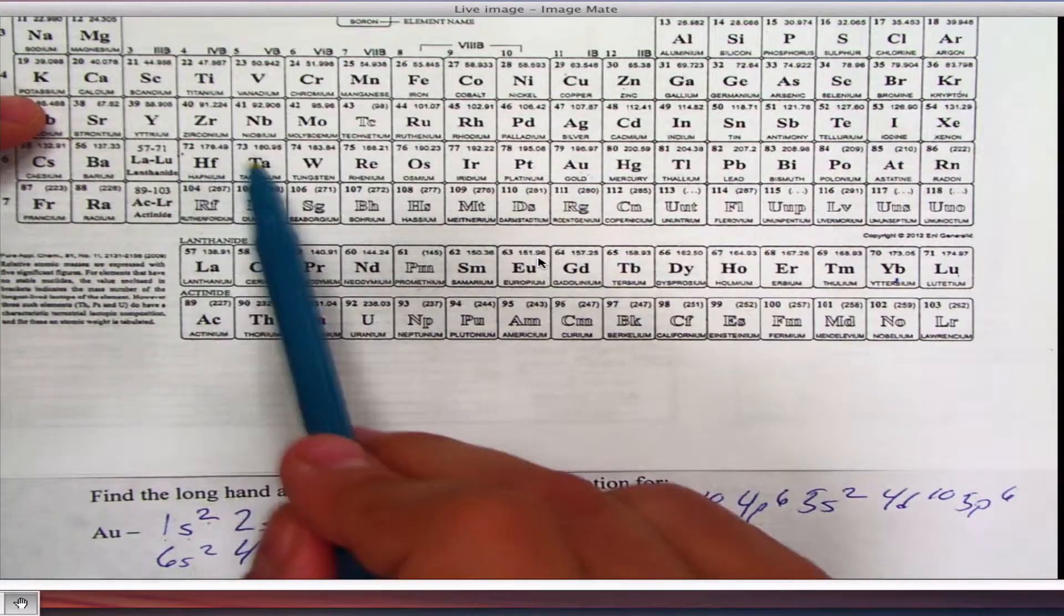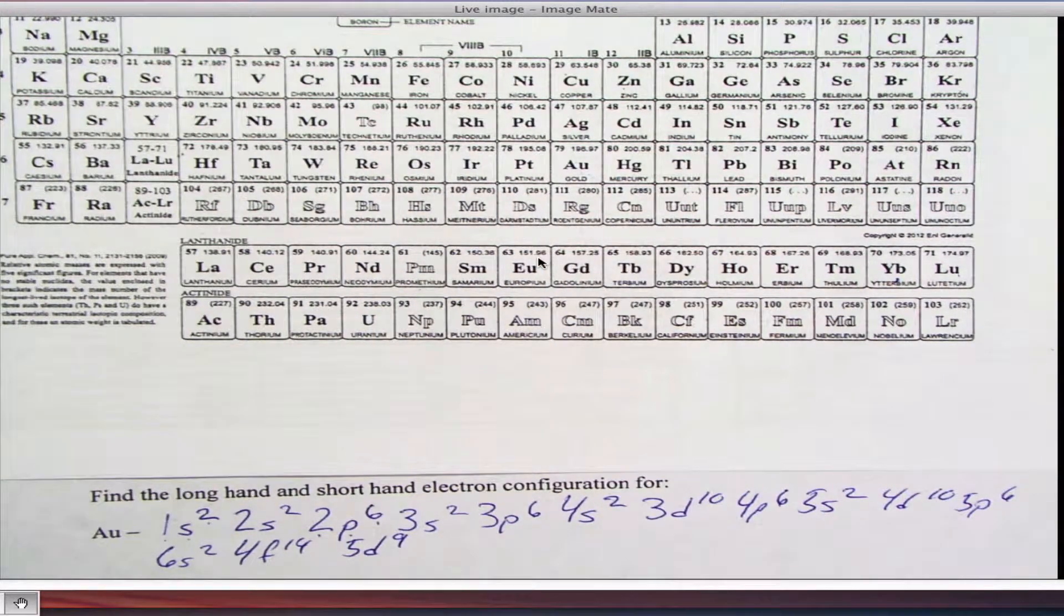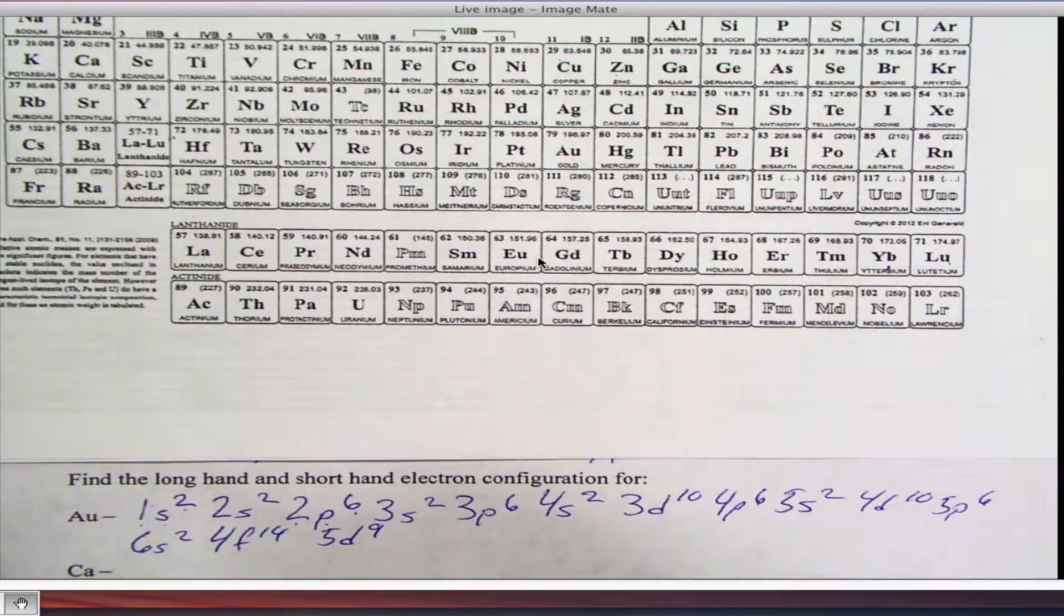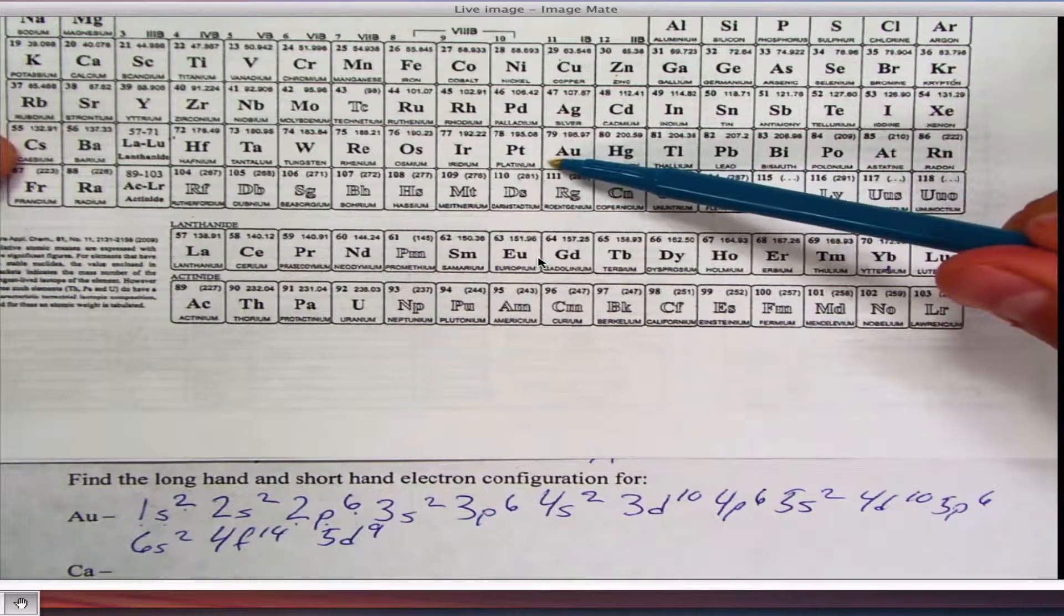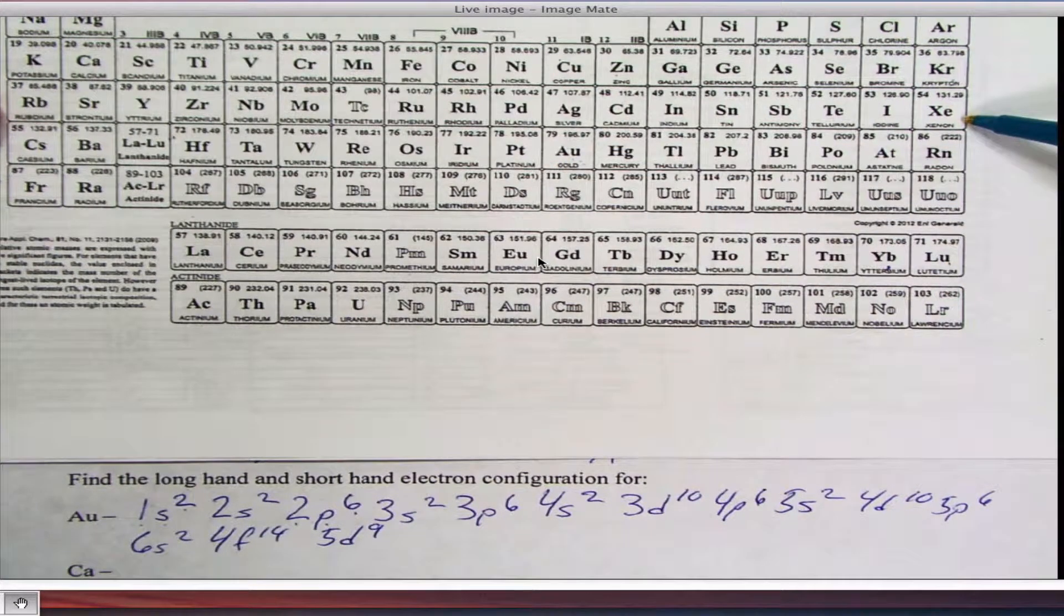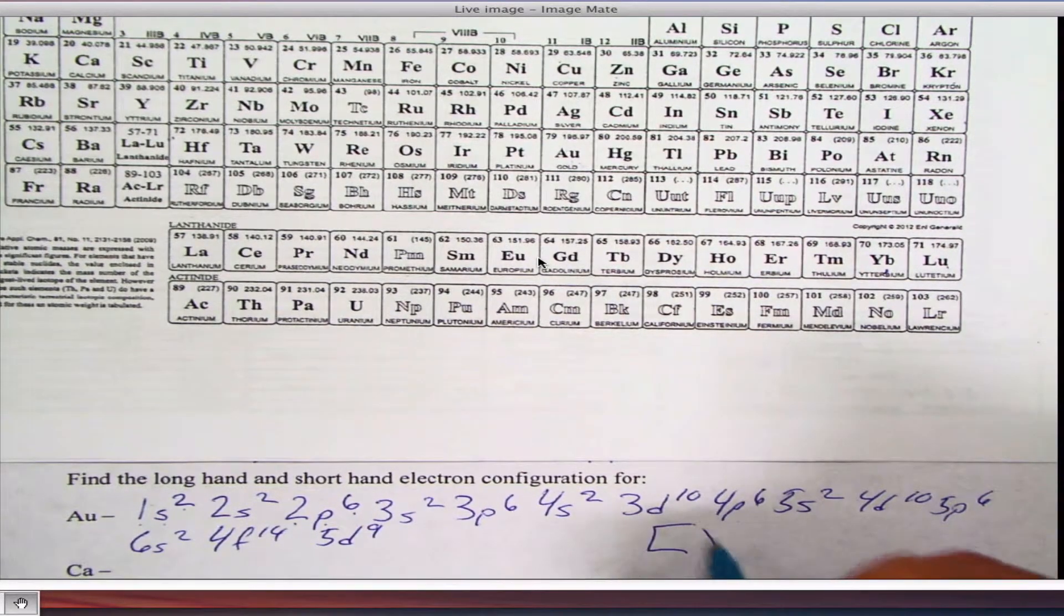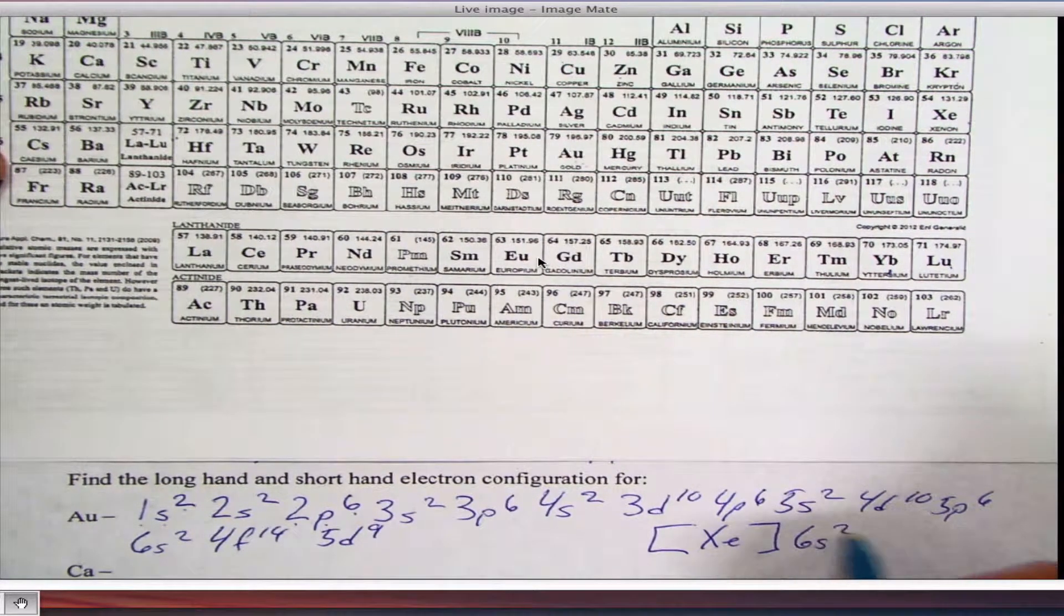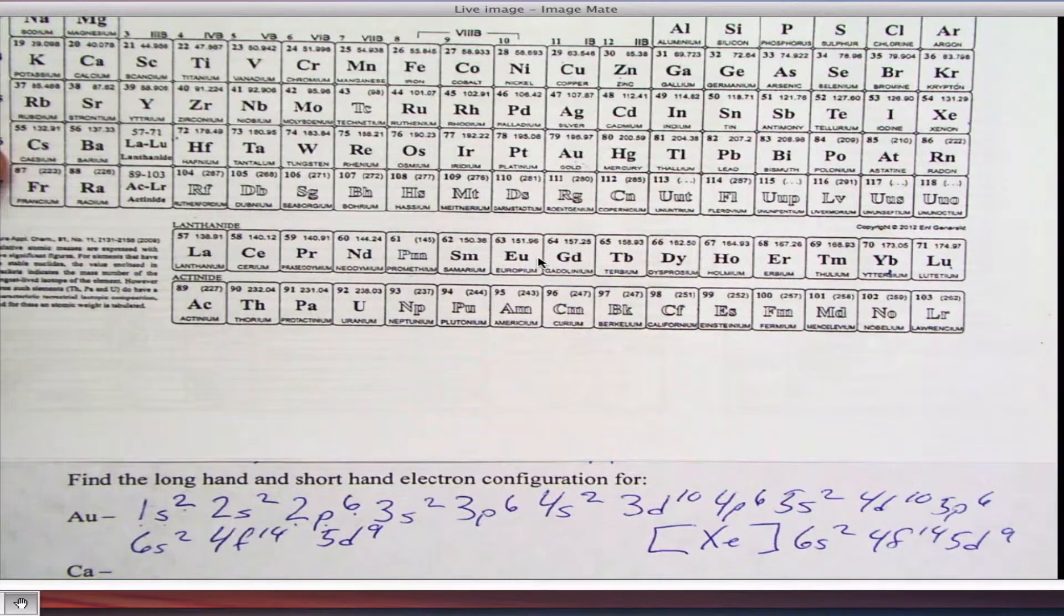So it's going to be 5D. Let's see. 5D 1, 2, 3, 4, 5, 6, 7, 8, 9. 5D9. Now, that's the longhand version. The shorthand version is like this. You start from the previous row. If gold is in the sixth row, I go to the fifth row, go to the last one. And I bracket that. And I say, well, I start at XE. And then I just continue from that sixth row. So then I go 6S2, 4F14, 5D9. So there's two ways to do it. There's a longhand version and the shorthand version.